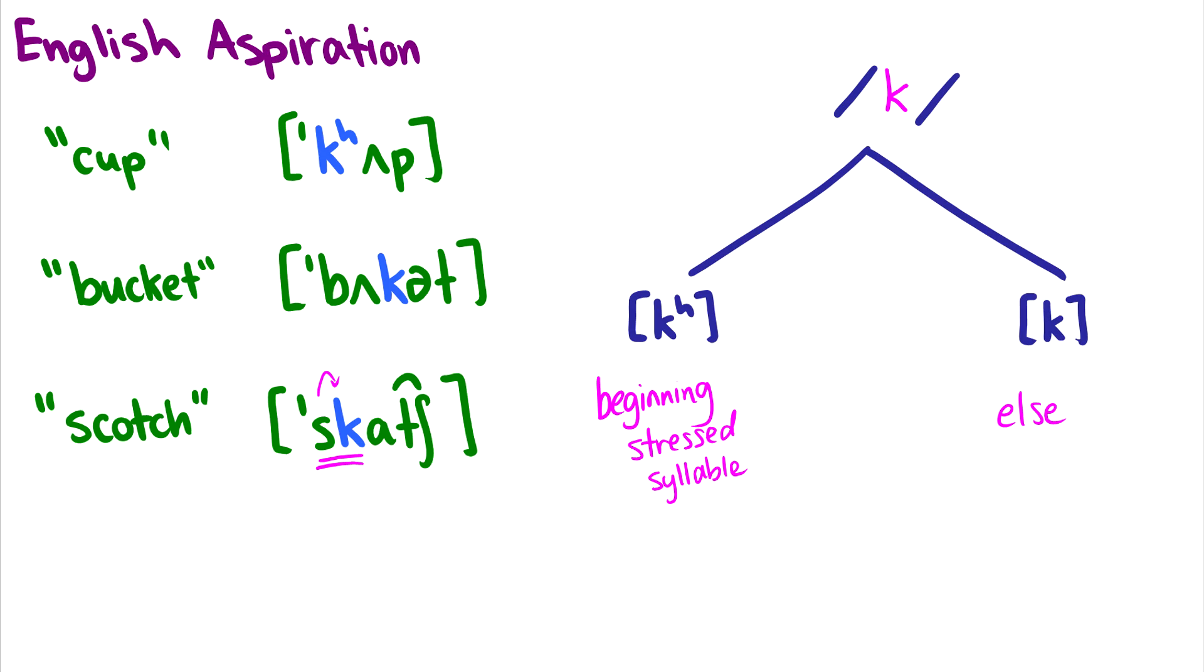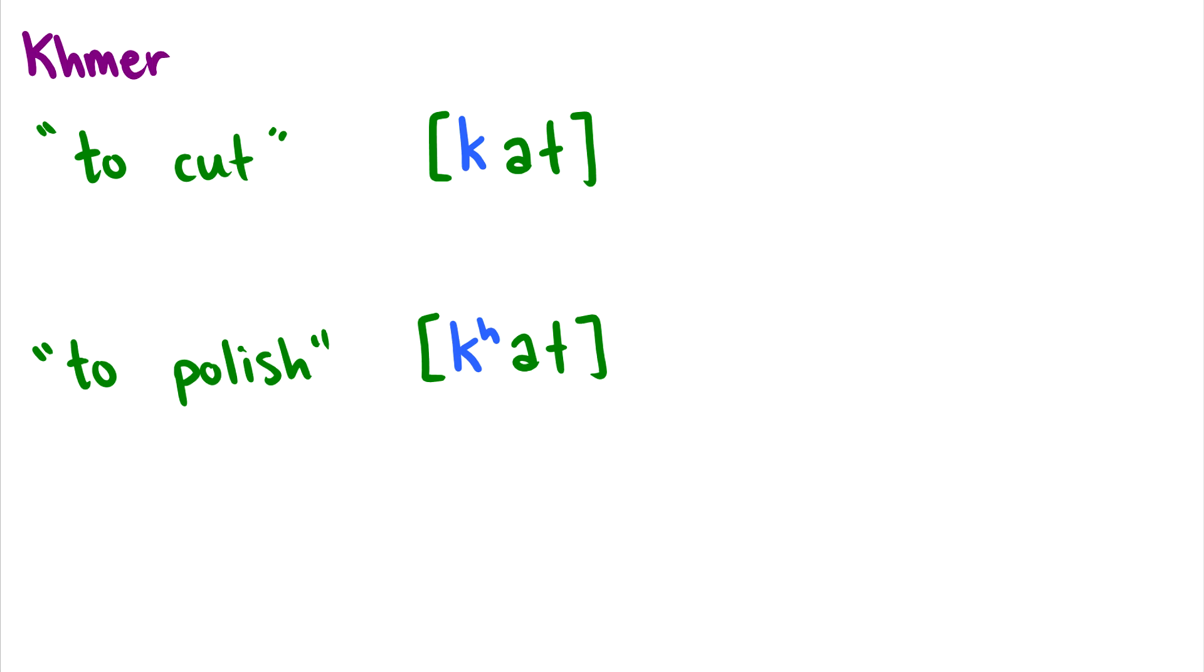There's another example. Now, I just told you that aspiration is essentially an allophone of the unaspirated version. So meaning that we don't distinguish the meaning of aspirated k from an unaspirated k. We hear them as the same thing. But there's a language, Khmer, that does hear a difference. So if you say kat with the aspirated k in English, it would mean to polish. But if I don't put aspiration on the k and I just say kat, then it means to cut. So in English, these would be the same word. We would hear them exactly the same. We would say these two mean the same thing.